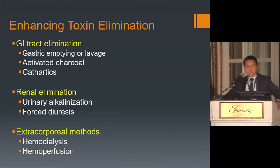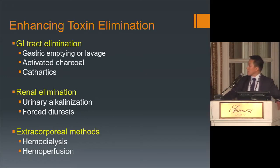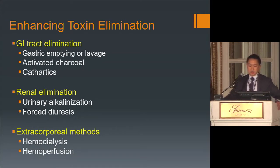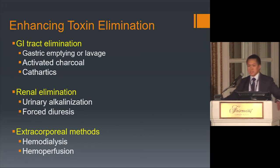Once the patient is stabilized, the next step is decontamination. There are three different ways to do this: GI tract elimination (gastric emptying, gastric lavage, activated charcoal, cathartics), renal elimination (urinary alkalinization or forced diuresis), or extracorporeal methods including hemodialysis and hemoperfusion. We'll focus mostly on the renal and extracorporeal methods.